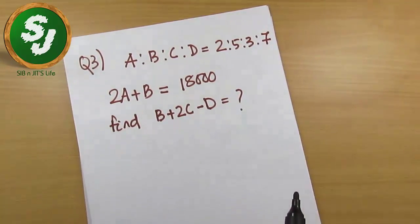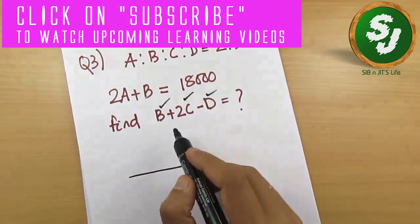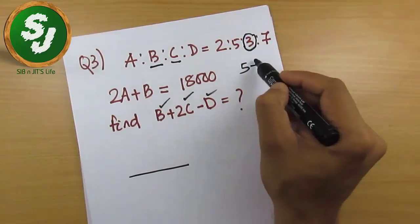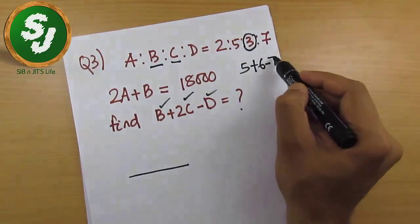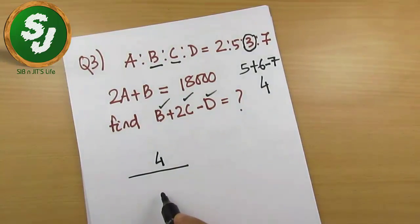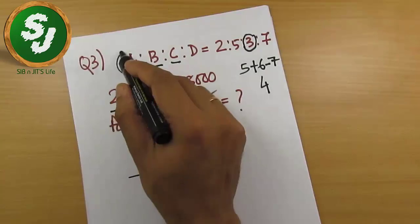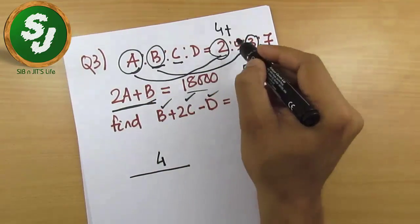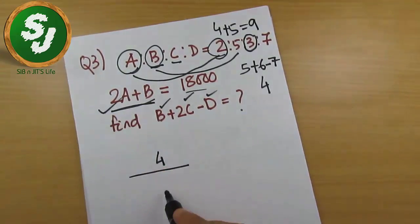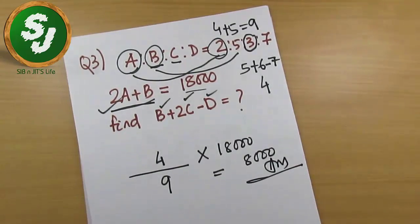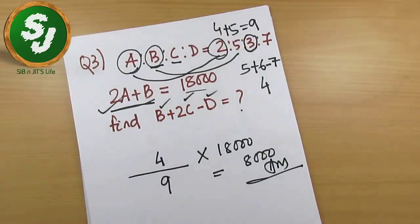Okay, we're back. The question asks for b plus 2c minus d, so that goes on top. B is 5, 2c means double of c which is 2 times 3 equals 6, and d is 7. So 5 plus 6 minus 7 equals 4 — that's the numerator. On the denominator, the given expression is 2a plus b: 2a means 2 times 2 equals 4, plus b which is 5, so 9. The answer is 4 over 9 into 18,000, which equals 8,000. I hope you understood well — you can watch this video again if you need more clarification. Good luck!